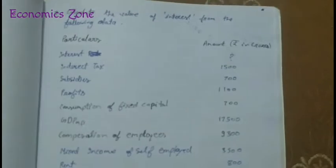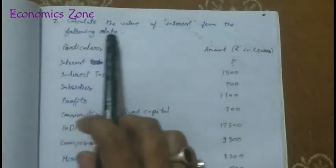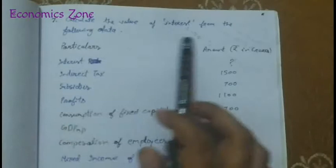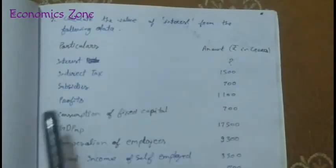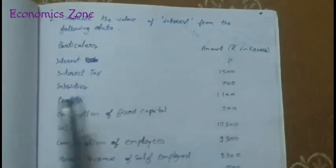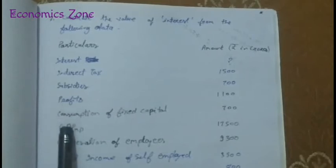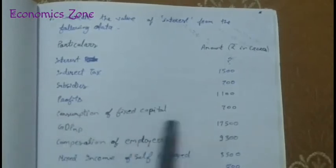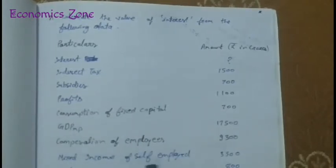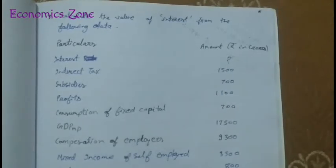So this is the first question: calculate the value of interest from the following data. Interest is not given. The following data is given: indirect tax, subsidies, profit, consumption of fixed capital, GDP, compensation of employees, and mixed income.